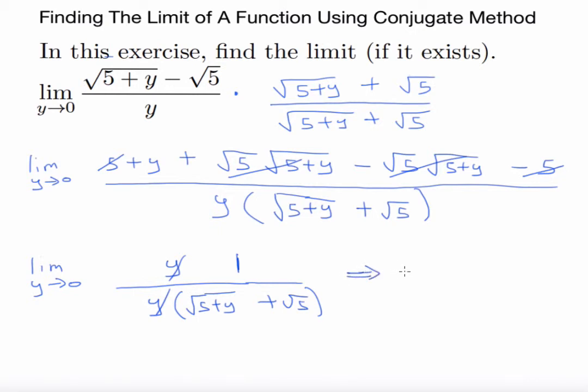when you plug in your 0 now, 1 over (√(5+0) + √5), which will essentially give us 1 over 2√5.